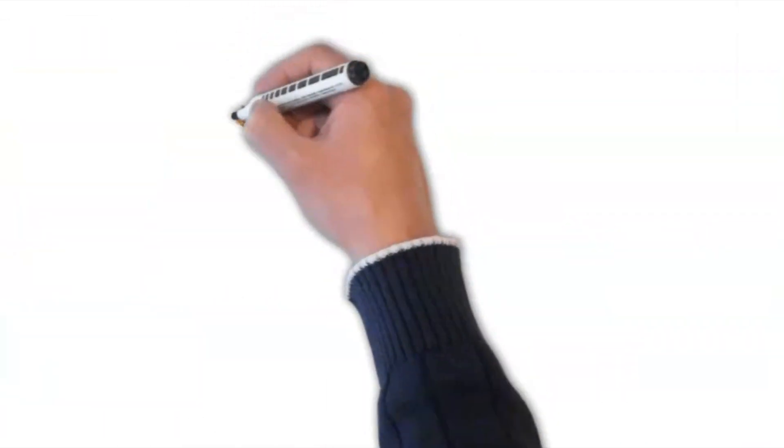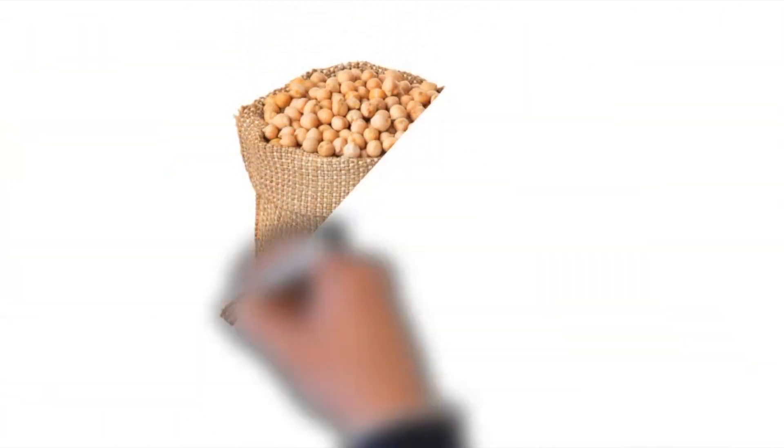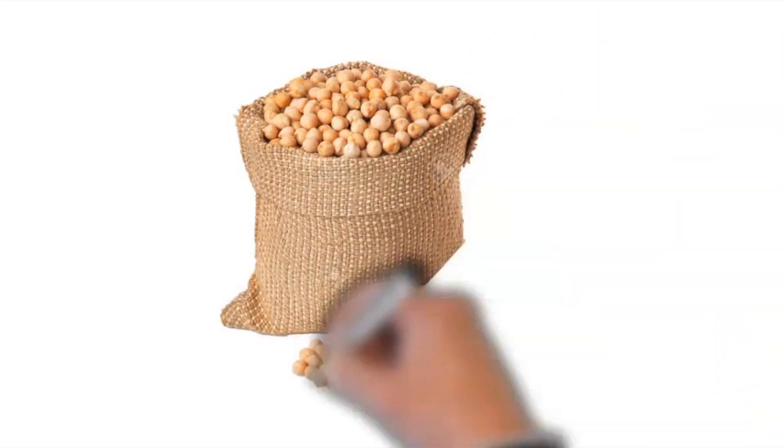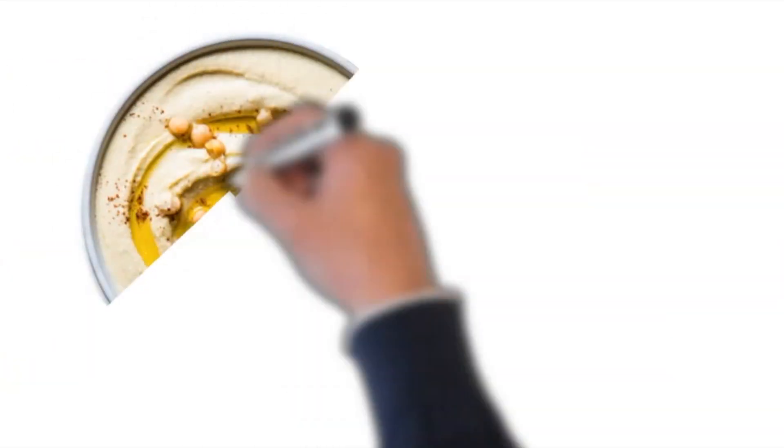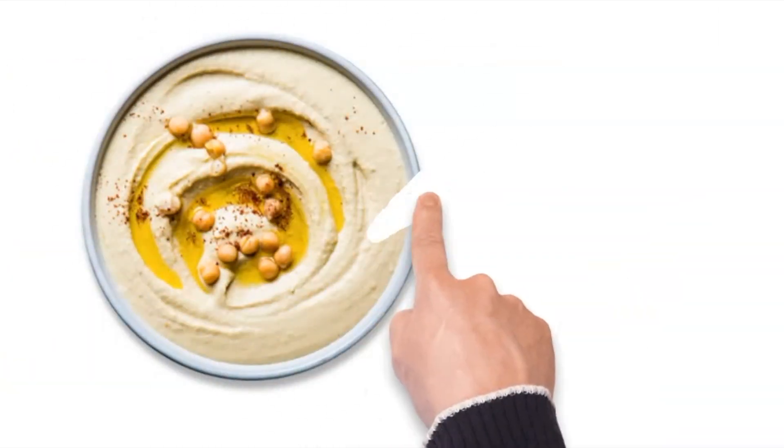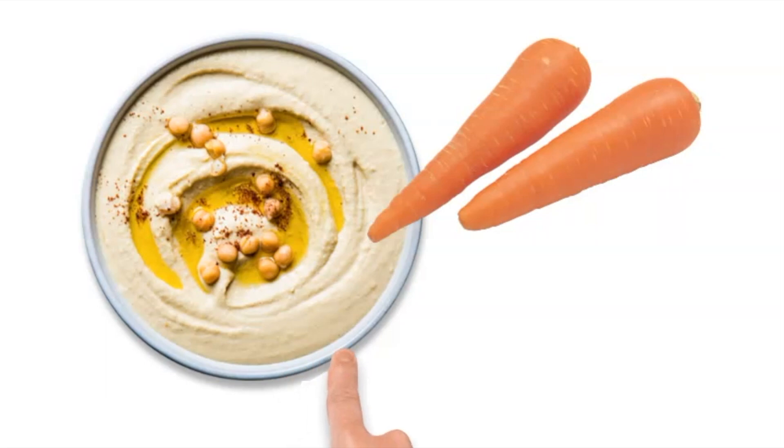Roasted chickpeas are crisp and effectively satiate hunger pangs. They also have a low glycemic index. For analogous reasons, hummus represents an exceptional choice for snacks, particularly when paired with celery or carrots.